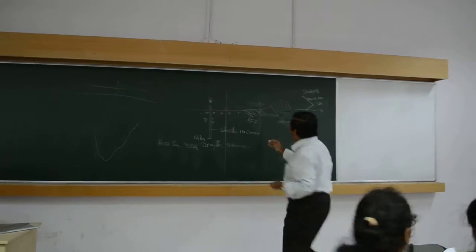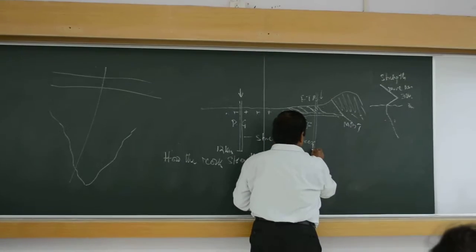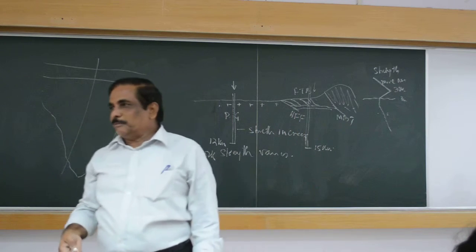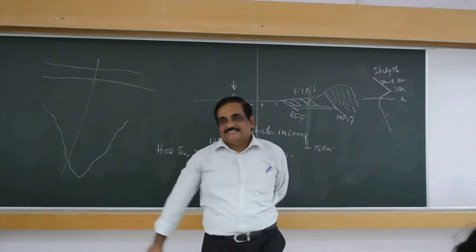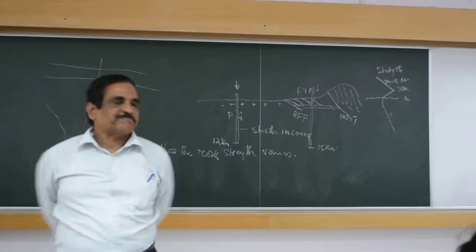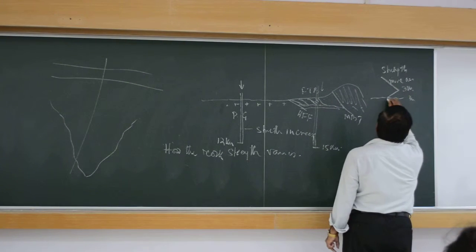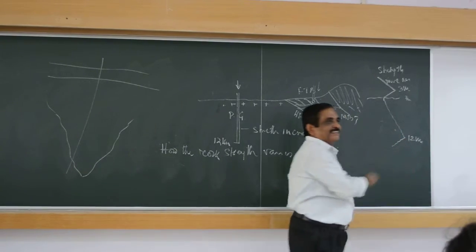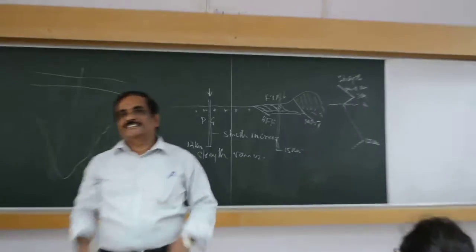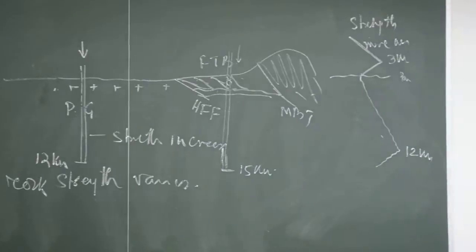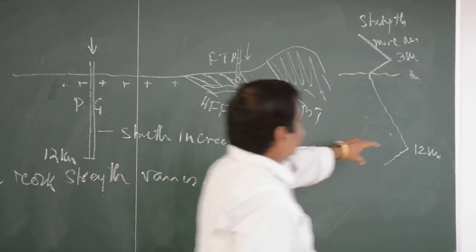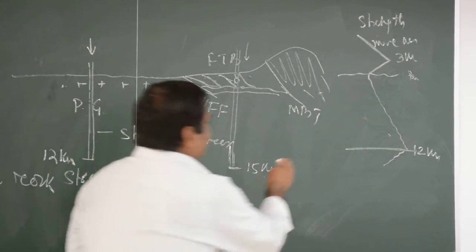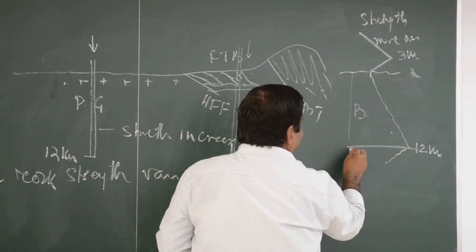Another point — so at this 12 km zone, here also 12 to 15 km, rock strength follows a pattern. Rock strength increases up to 12 km, then it becomes less. Strength means the tendency to resist fracture. So it becomes less beyond 12 km. This 12 km zone is known as the brittle zone. Above 12 km is brittle. This is brittle.